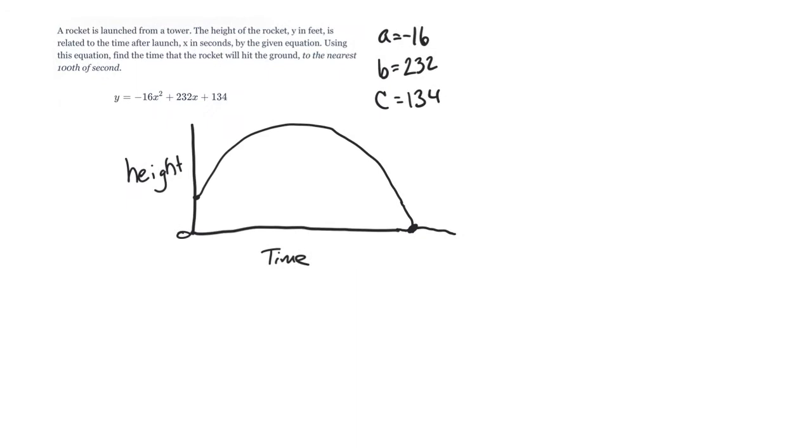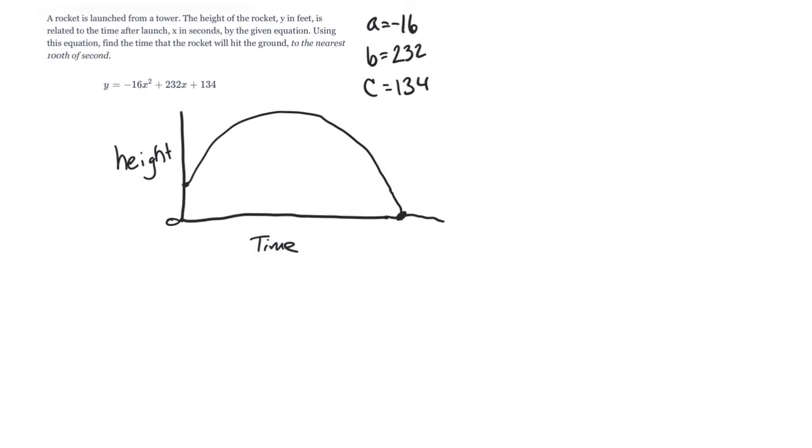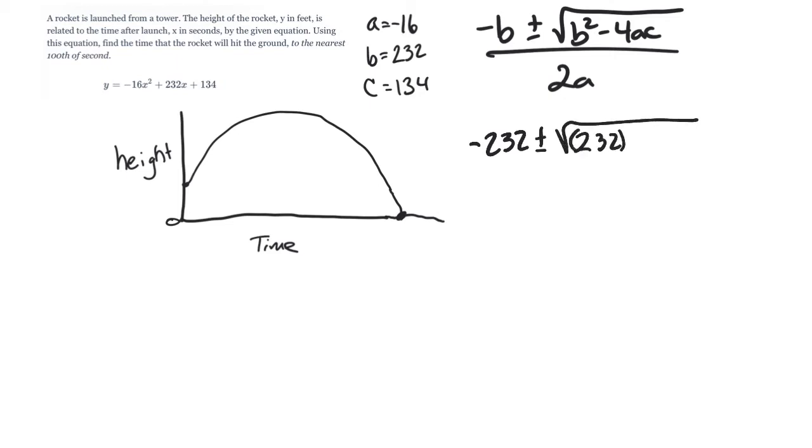Let me give myself some space here. So the quadratic formula, as we know, is negative b plus and minus the square root of b squared minus 4ac, and it's all over 2a. So negative b, we've got negative 232. We'll have plus and minus the square root of 232 squared minus 4 times negative 16 times our c value of 134. I know we're going to end up with big numbers, but it's okay. I got a calculator. So we have 2 times negative 16 on bottom.